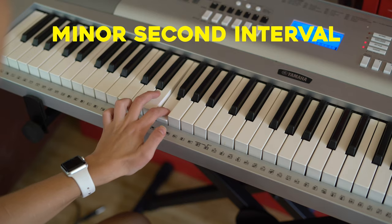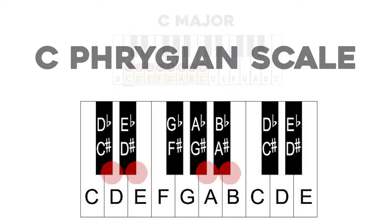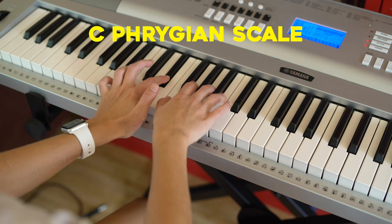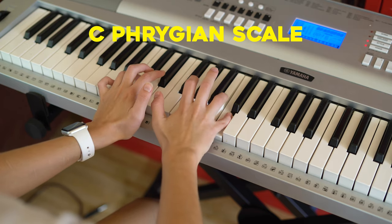Finding C Phrygian is a bit more work: take the second, third, sixth, and seventh notes of the C major scale and lower them all by one semitone. This is the Happy Birthday song in C Phrygian.